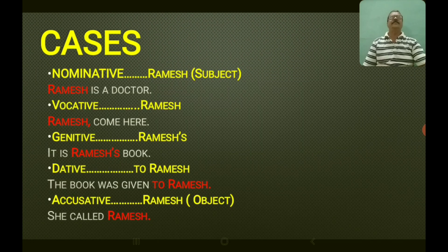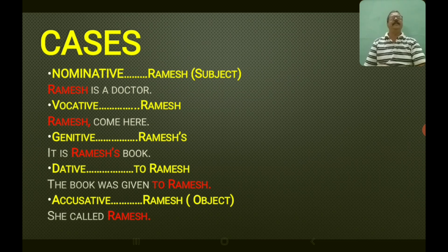Next, you have cases. There are five cases in English: nominative, vocative, genitive, dative, and accusative. The nominative case is found in the subject part of the sentence. For example, in 'Ramesh is a doctor,' Ramesh is the subject, so it is in the nominative case.